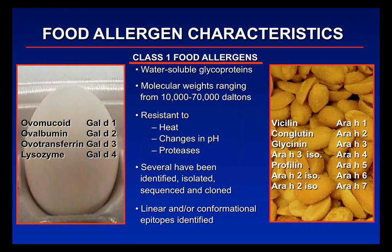Most allergens are water-soluble glycoproteins with a molecular weight small enough to be absorbed across membranes. The majority are resistant to heat, pH changes, and proteases, which is how sensitization occurs. Many allergens have been identified, sequenced, and cloned. They are named in order of discovery with the species designation in front. Common egg allergens include ovomucoid, the most common. Common peanut allergens are also well-characterized with more than seven identified.